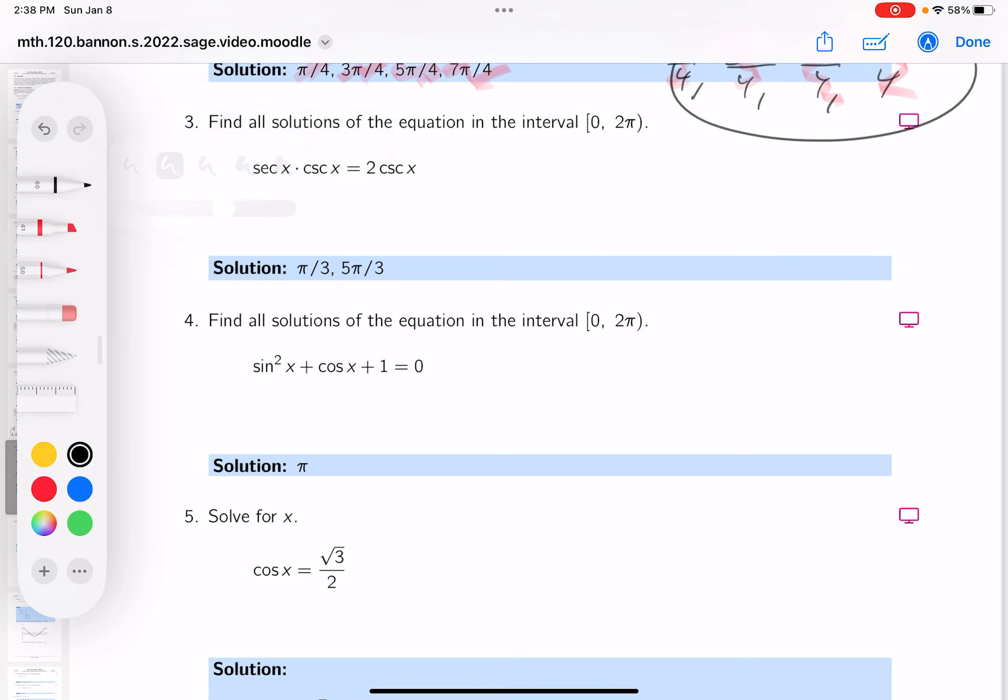I'm going to do this in terms of sines and cosines, and I want to do that quickly. So it's going to be 1 over cosine times 1 over sine equals 2 over sine.